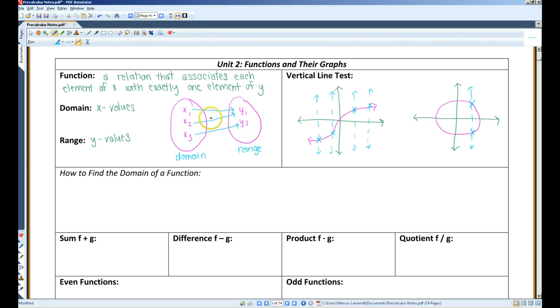Notice that two x values can have the same y value, but you cannot have two y values with the same x value. The domain would be the x values and the range would be the y values.